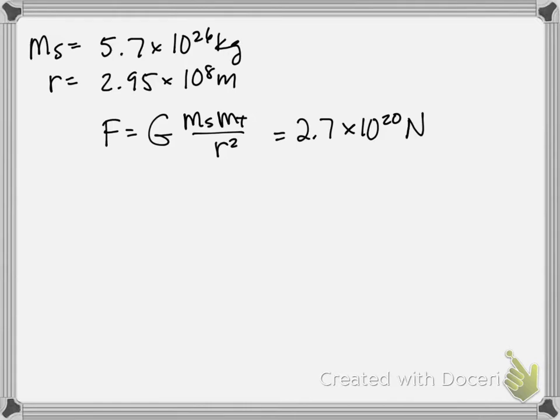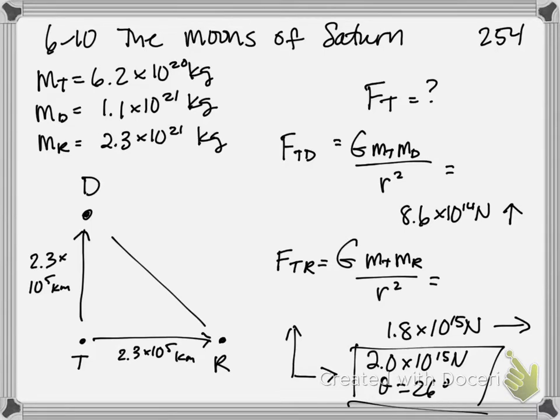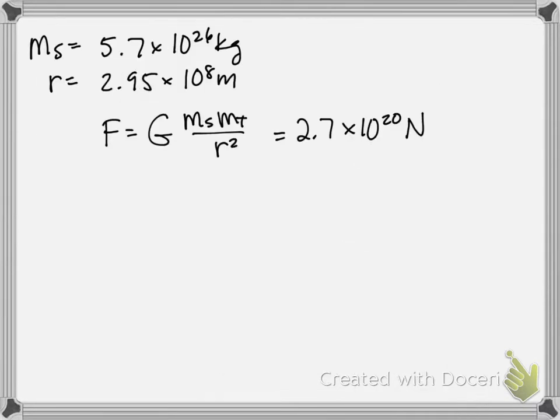So when they say compare this to the force that Saturn exerts on Tethys, well, these two moons are exerting something on the order of 10 to the 15th. Saturn is exerting something on the order of 10 to the 20th. That's probably not surprising. The planet's a lot bigger. And the other moons are going to pull each other, canceling things out. So this is less a gravity problem and more a net force problem. So just think of it as another opportunity to practice your vector addition while also practicing our formula for gravity.